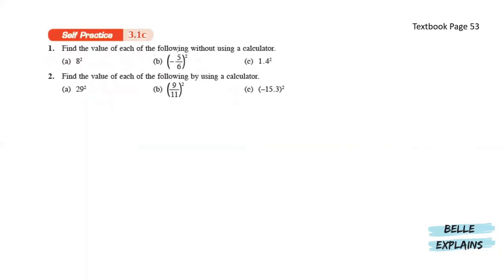Find the value of each of the following without using a calculator. So here we have 8 squared, so 8 squared is actually 8 times 8. That should give us 64. Pretty simple.